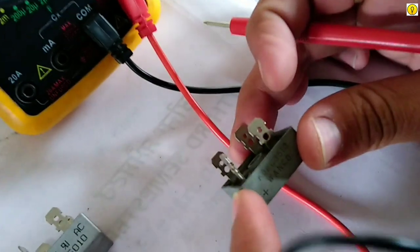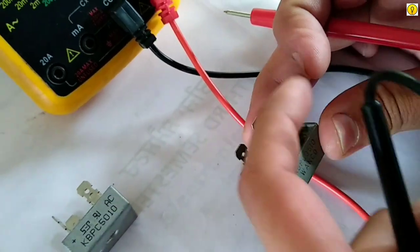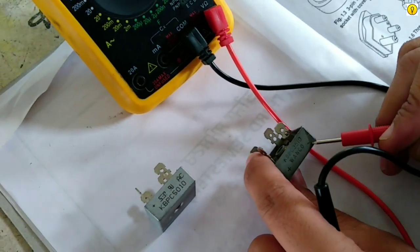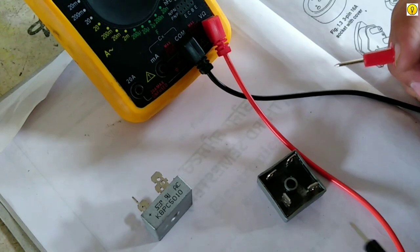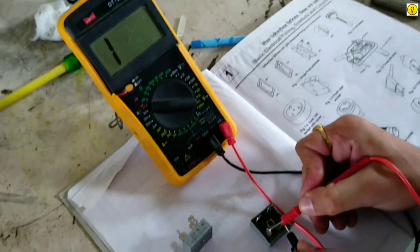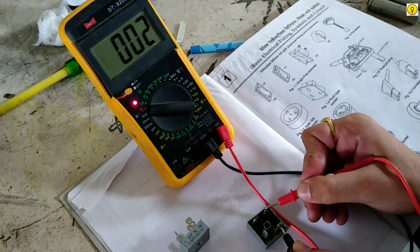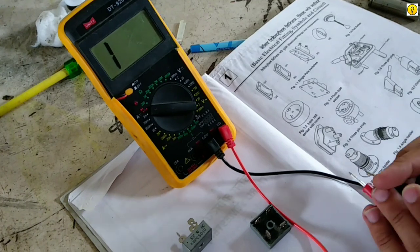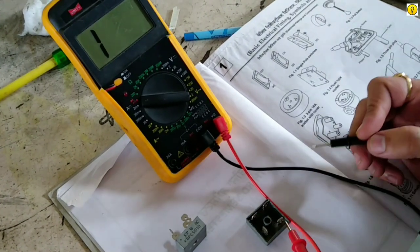We check from this positive terminal. Okay, so now we are going to check the diode with input supply terminals. This diode shows continuity.